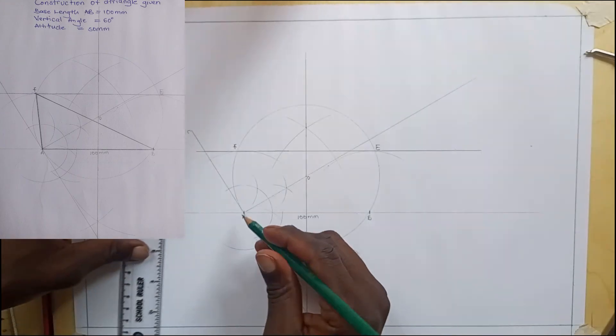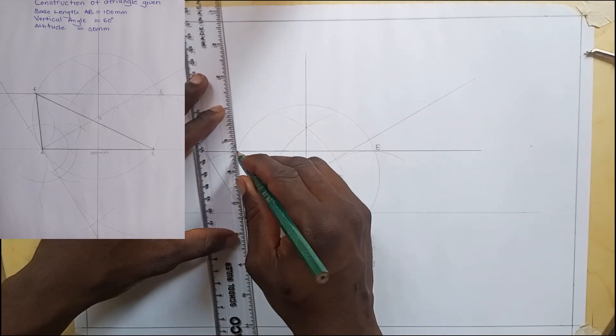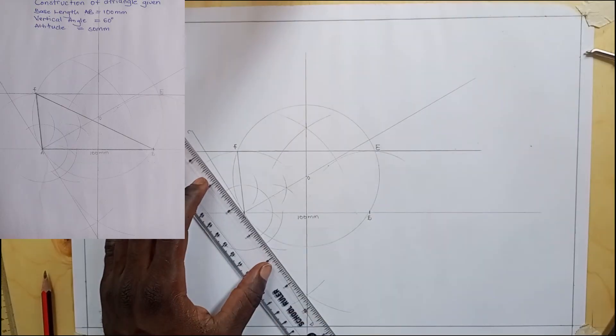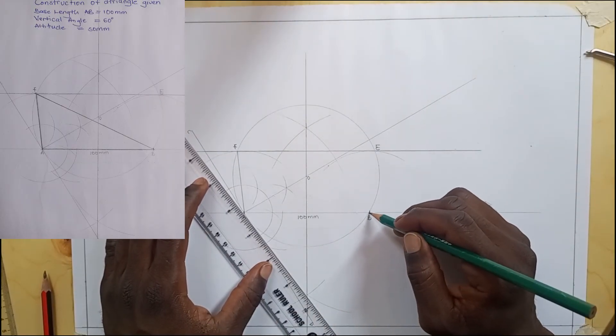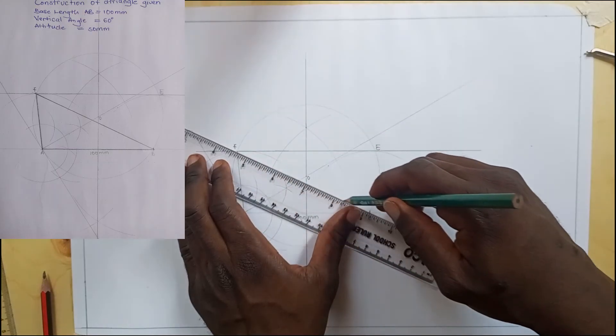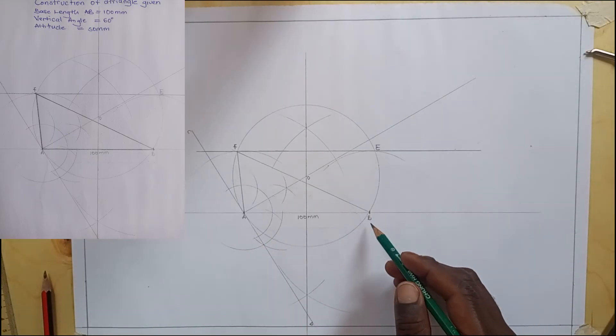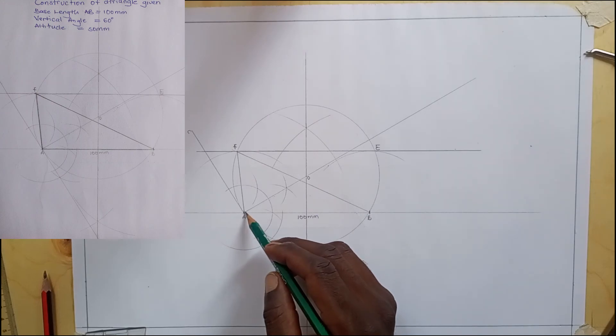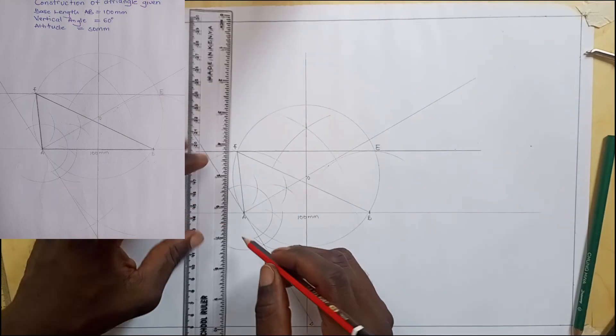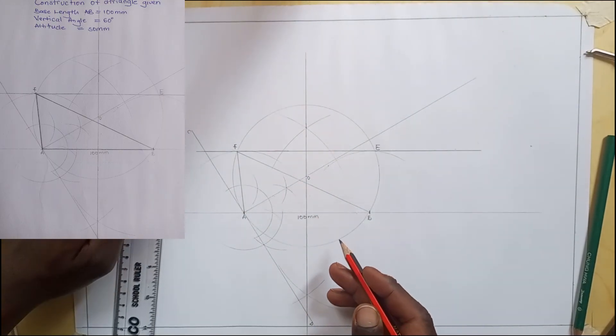Then I'll join point A to F, and I'll join point B to F. You can do it either way, whereby you join B to E then A to E, but for this case I'll choose this way. ABF is our required triangle, so I'll make it thick.